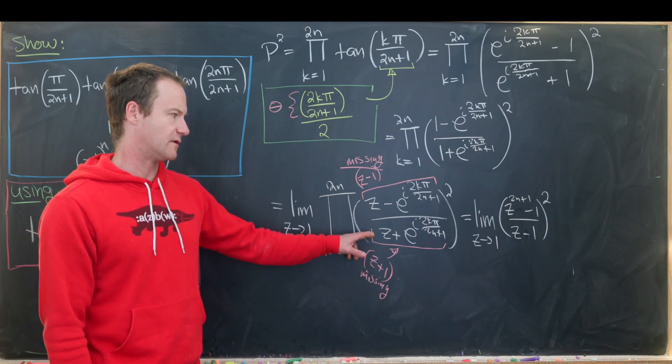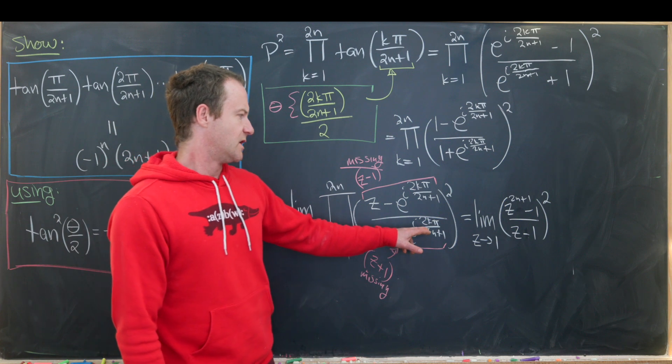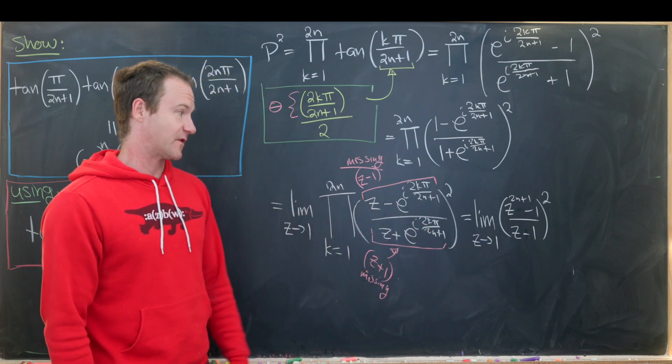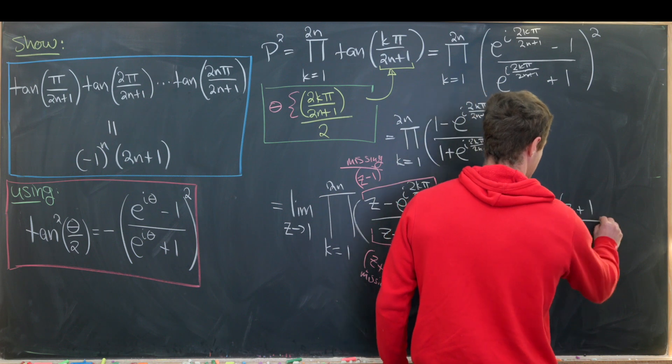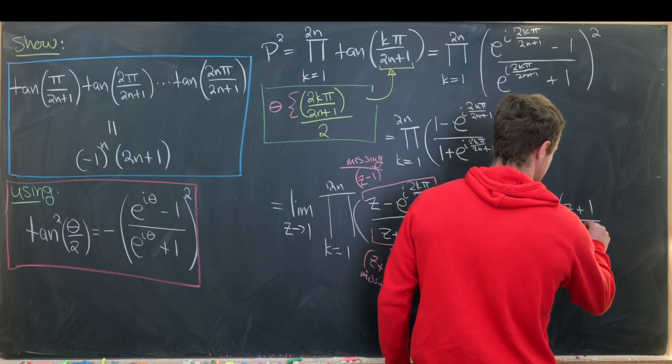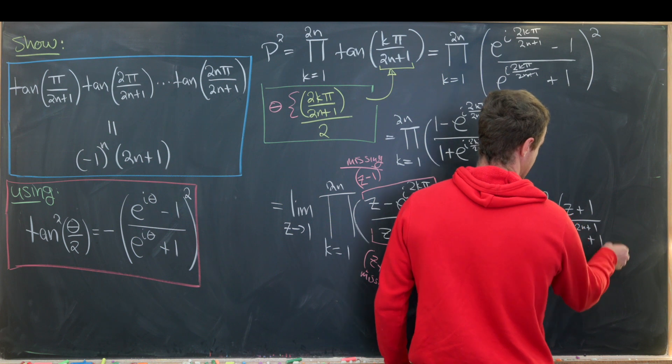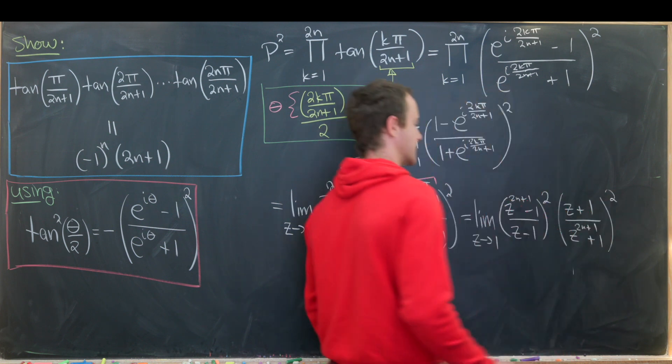So that'll be all 2n plus 1 roots of unity except for 1. And this is all of the odd roots of 4n plus 2 except for negative 1. So we can similarly write that as z plus 1 over z to the 2n plus 1 plus 1. And then here we have this is squared as well.